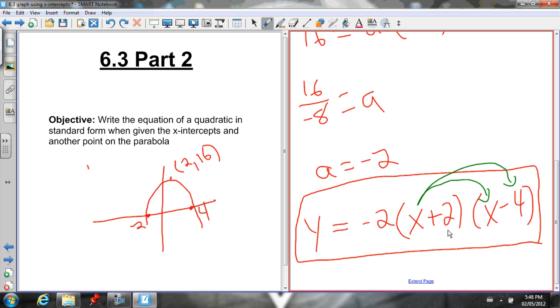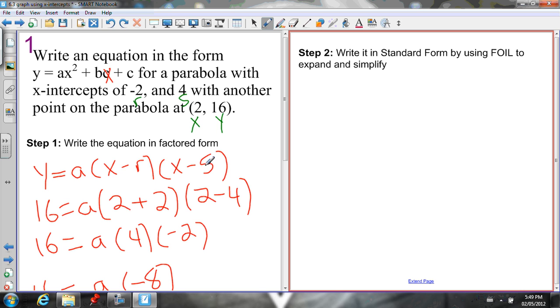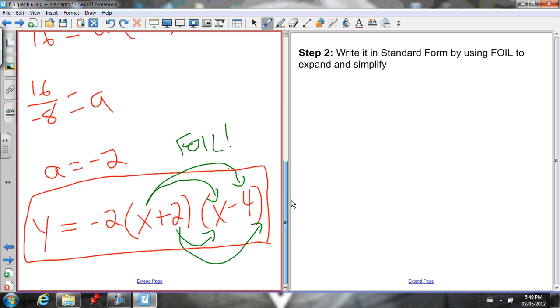Multiply the first terms, the outside terms, the inside terms, and the last terms. So we're going to use the FOIL method, and that will turn this into standard form. Don't forget, after you've multiplied these binomials, you then have to multiply that whole product by negative 2. Because negative 2 needs to be multiplied by these as well. Don't forget about that negative 2 out front. Step number 2, we need to write what we have here, the factored form equation, in standard form by using FOIL.